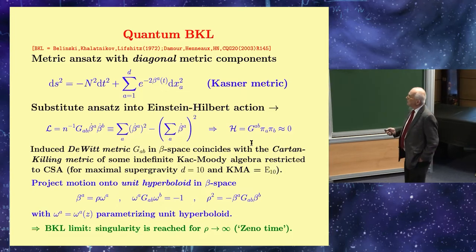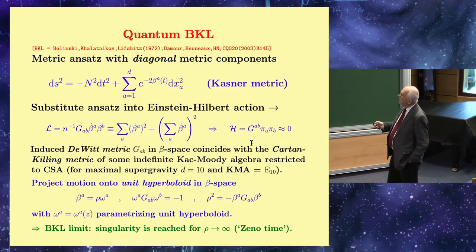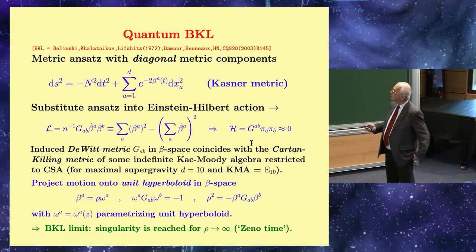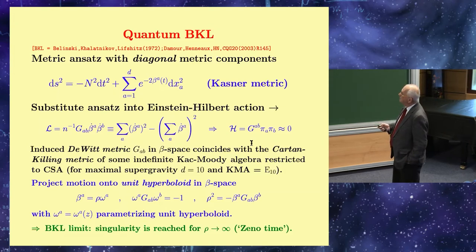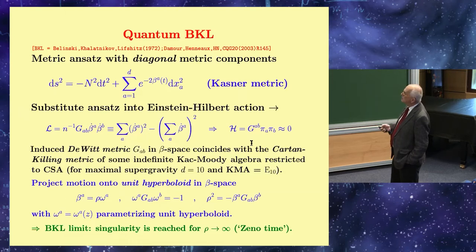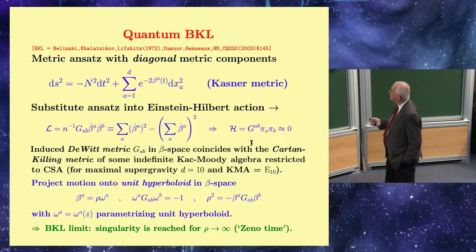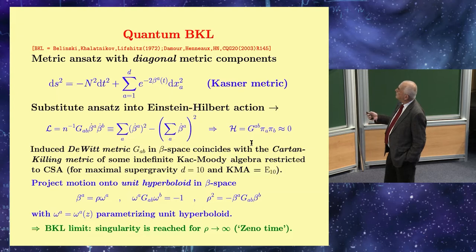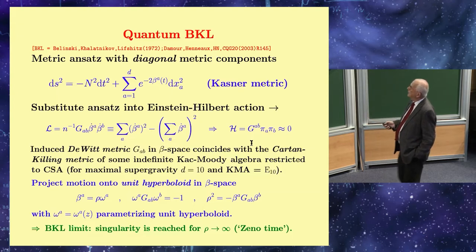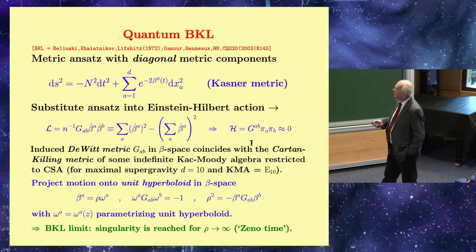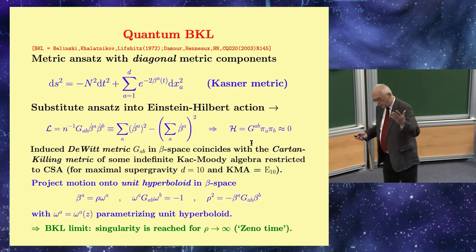When you translate it into Hamiltonian, it's just a statement that p squared equals zero. This is something well known from elementary quantum field theory. Now the crucial thing is that the metric you get from this action is, first of all, Lorentzian—that's one of its crucial, famous features.